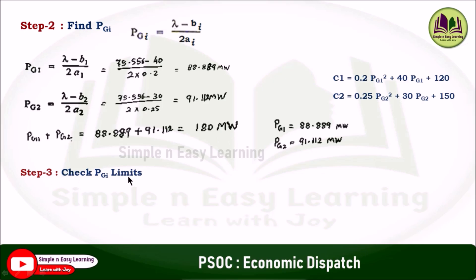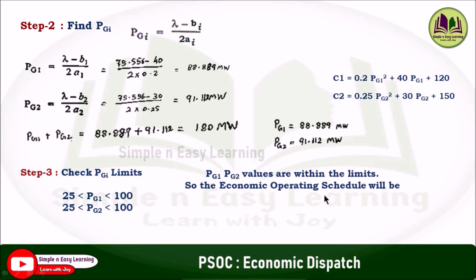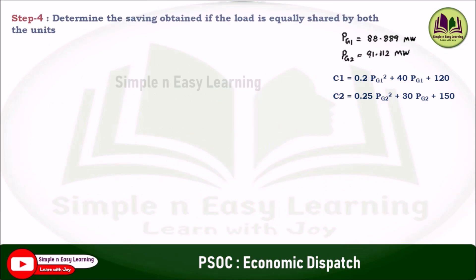Step 3: check the PGi limits. The limits are given from 25 to 100. PG1 lies within the limit and PG2 also lies within the limit. So the economic operating schedule will be PG1 equal to 88.889 megawatt and PG2 equal to 91.112 megawatt.